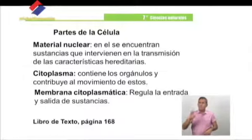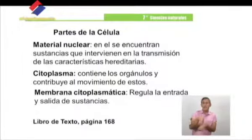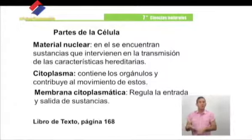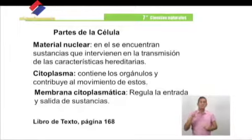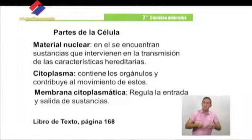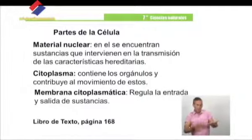Dentro de estas partes vamos a encontrar diferencias entre ellas, pero en ambos casos, en el material nuclear se encuentran las sustancias que intervienen en la transmisión de las características hereditarias. En el citoplasma contiene los orgánulos y contribuye al movimiento de estos; los orgánulos que encontramos en el citoplasma están en constante movimiento. Y la membrana citoplasmática en ambas células es la que regula la entrada y salida de sustancias. Estos elementos los podemos encontrar en nuestro libro de texto en la página 168.